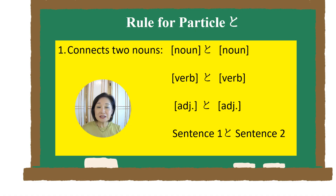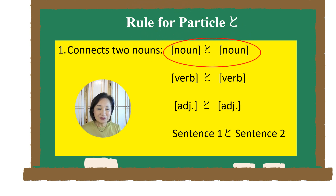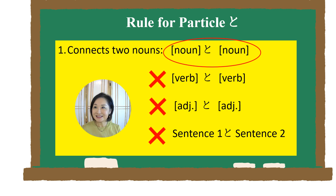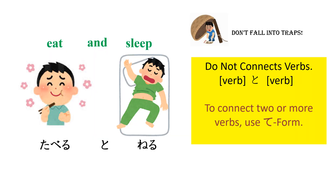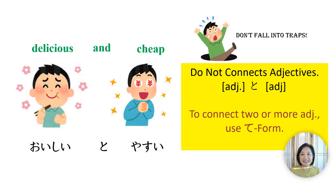Here is an important rule about the particle TO. It connects nouns only. It cannot be used to connect verbs, adjectives, or to link two or more sentences. For example, you cannot say 食べると寝る to mean 'eat and sleep.' Both 食べる and 寝る are verbs, so you cannot connect them with the particle TO.